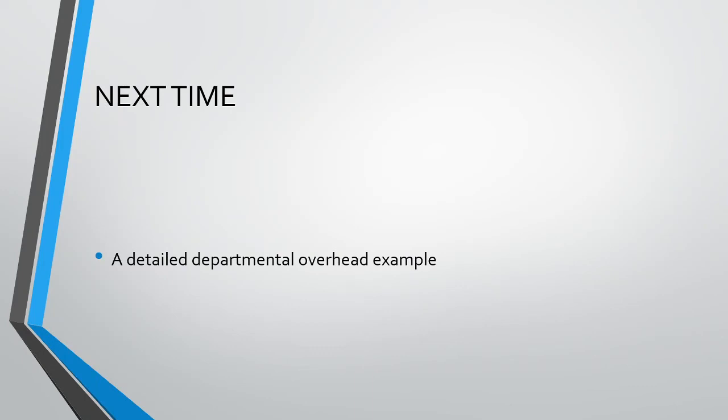That brings us to the end of our example on plant-wide overhead rates. In our next group of videos, we will be working through a departmental example. This example will be split up over a number of videos. Our next video will deal with allocating overheads to the various departments. After this, we will have a separate video to deal with each of the different methods of reallocating the support department overheads to the production departments. See you next time.